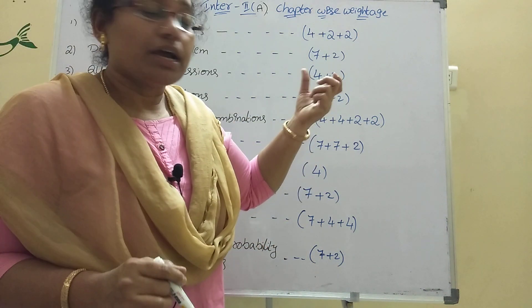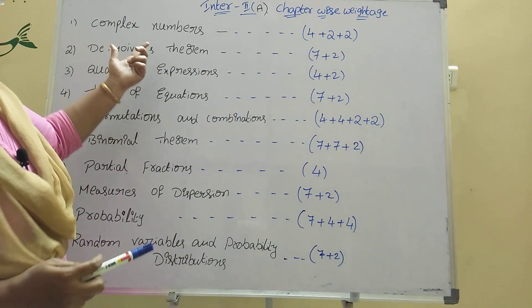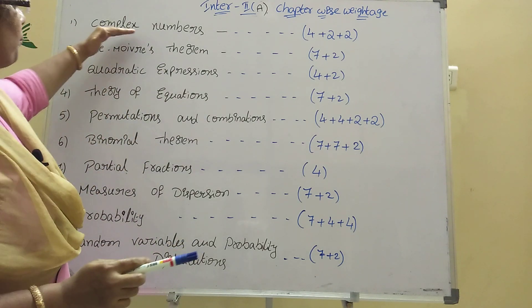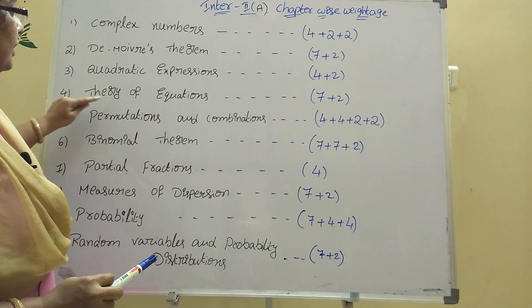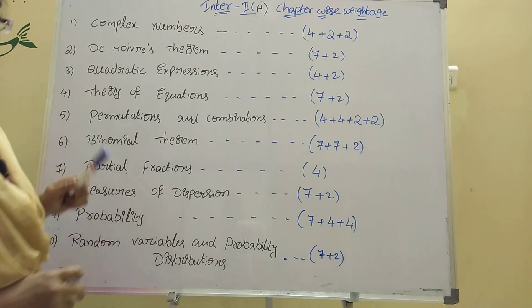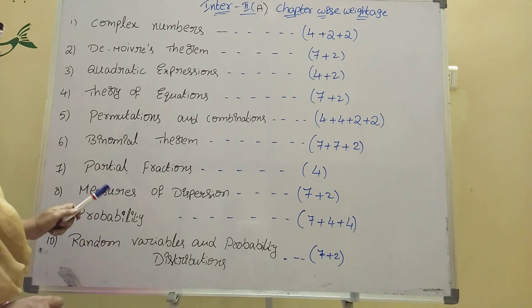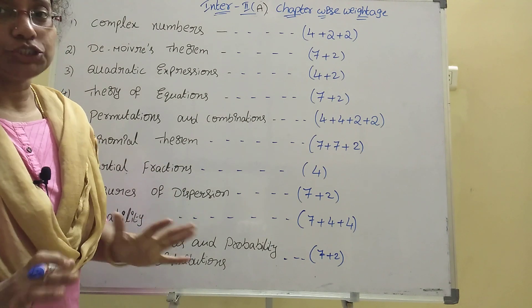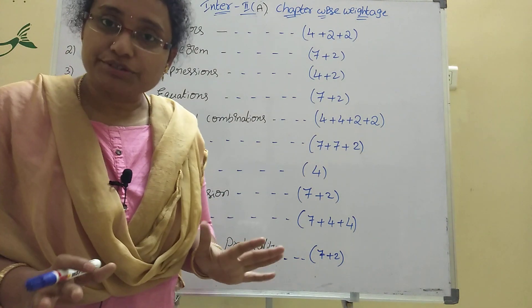Each chapter has different marks. Let me explain. Complex numbers is the first chapter. The 10 chapters are: Complex numbers, De Moivre's theorem, Quadratic expressions, Theory of equations, Permutations and combinations, Binomial theorem, Partial fractions, Measures of dispersion, Probability, and Random variables and probability distributions. In these 10 chapters, there are 7-mark, 4-mark, and 2-mark questions.